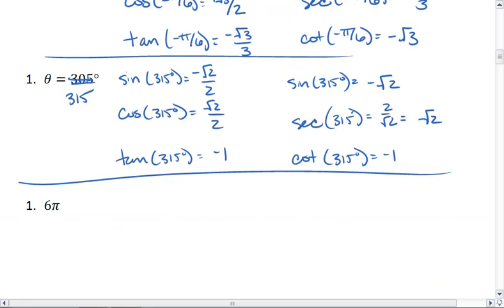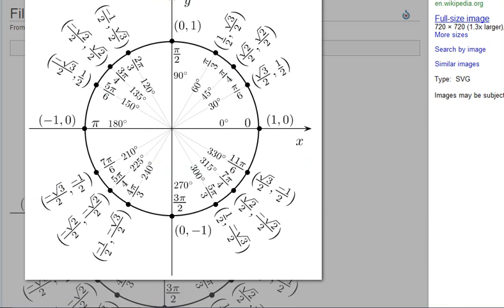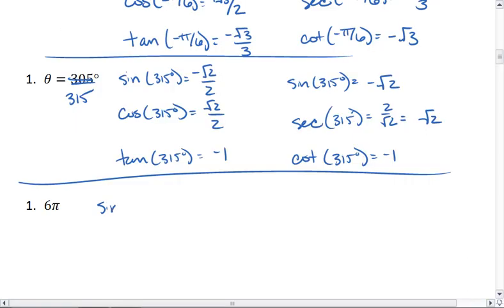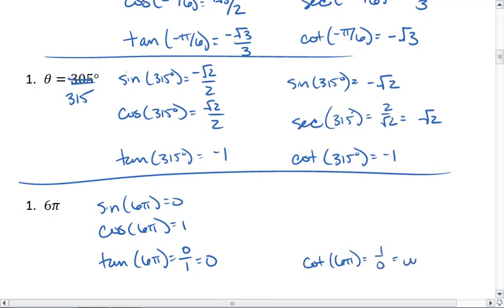Lastly, let's look at 6π. If we have 6π, we are going 3 full rotations, which puts us over in the 3 o'clock position, where cosine is 1 and sine is 0. That means tangent, which is sine over cosine, is 0 over 1, which is 0. Cotangent is 1 over 0, which is undefined. Secant is 1 over 1, which is 1. And cosecant is 1 over 0, which is again undefined.